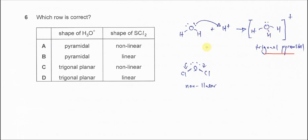So the answer can just be A or B. For the SCl2, we know that sulfur is the central atom and it has two bonding pairs and two lone pairs.